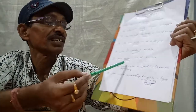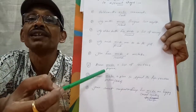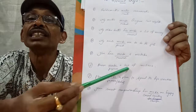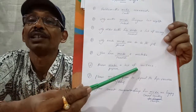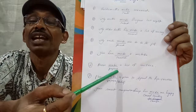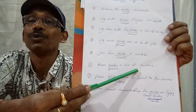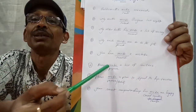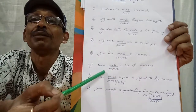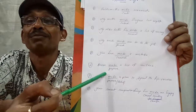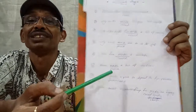Sixth example: 'Please make a list of invitees.' This means please prepare a list of invitees. So here 'make' is used in place of 'prepare.'